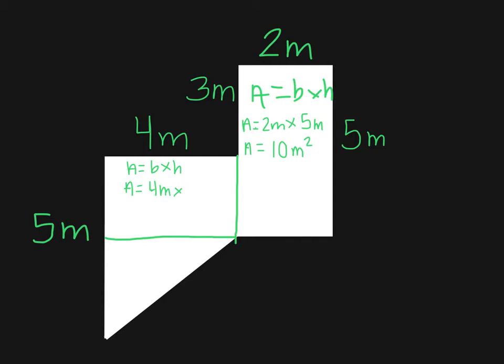What we do know is this entire side length right here is 5 meters. And how do we know that? We know that because this side length is 5 meters and equal and opposite sides for parallelograms. So if one side is 5 meters, the other side is going to be 5 meters.